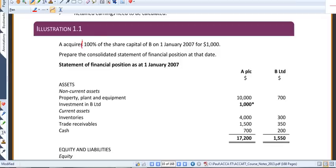Here, A acquires 100% of the shares of B on the 1st of January 2007 for $1,000.